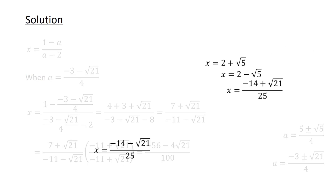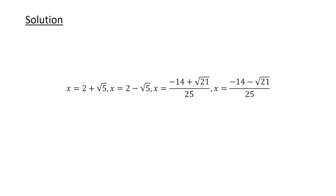Therefore, the solutions to our original equation are 2 plus root 5, 2 minus root 5, minus 14 plus root 21 over 25, and minus 14 minus root 21 over 25.